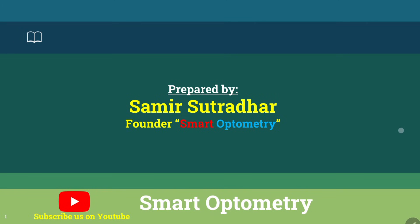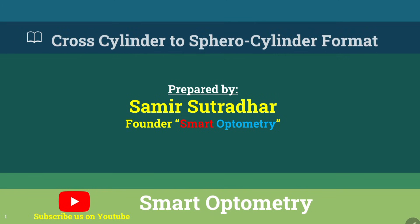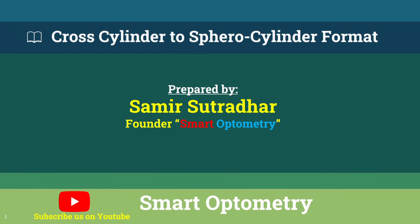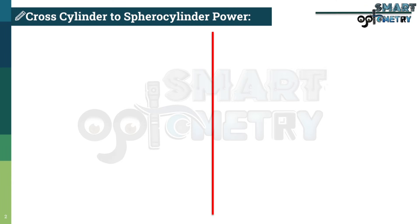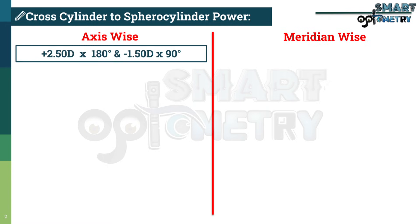In this video, I will discuss how to convert cross-cylinder power to sphero-cylinder format. Cross-cylinder power can be written in two formats: axis-wise and meridian-wise. The example of an axis-wise power is plus 2.5 at 180 degree axis and minus 1.5 at 90 degree axis.